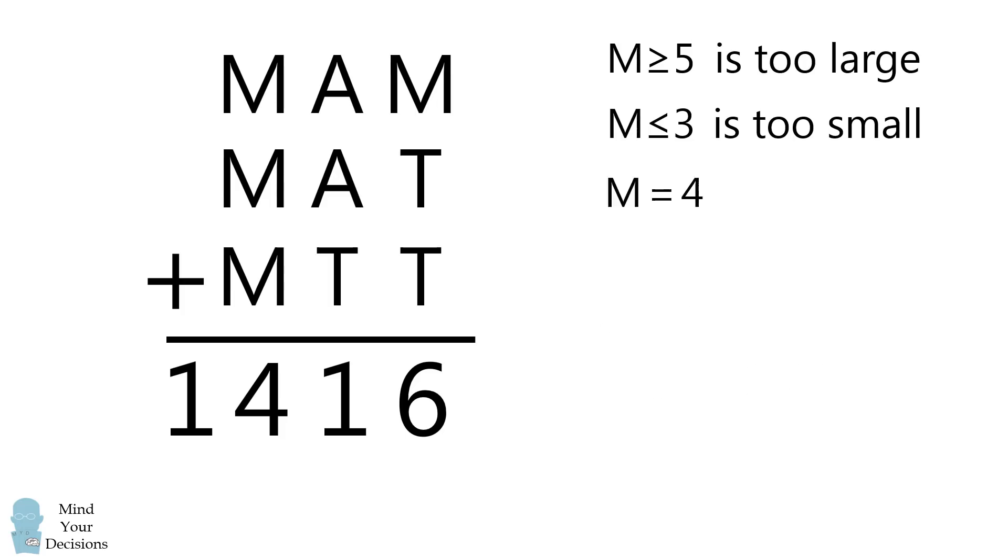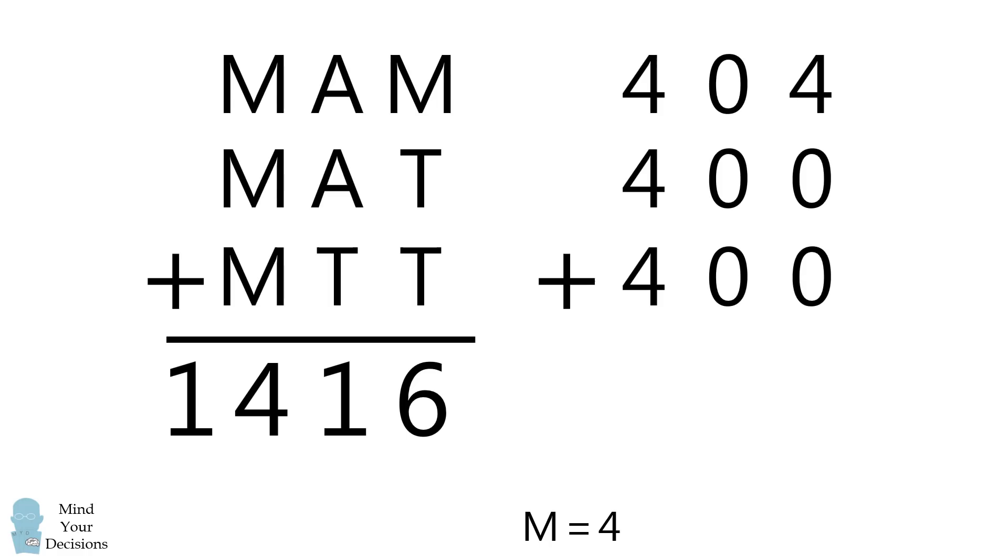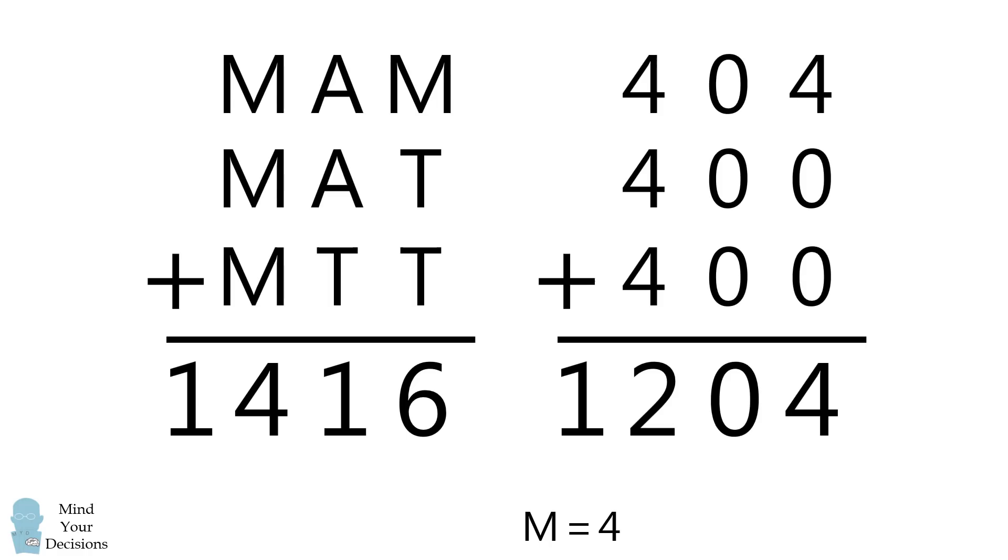What remains is M is equal to 4. This will simplify our calculation. If we substitute M is equal to 4, we know that just from the terms involving M, we get a sum of 1204.